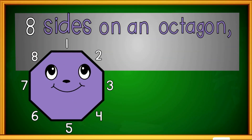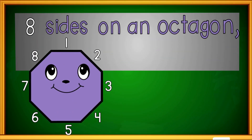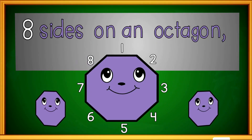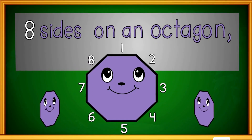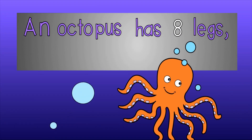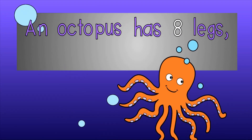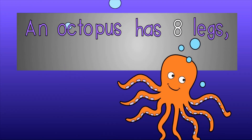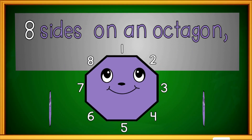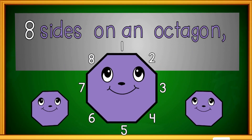There are eight sides on an octagon, eight sides on an octagon. Think an octopus has eight legs — eight sides on an octagon.